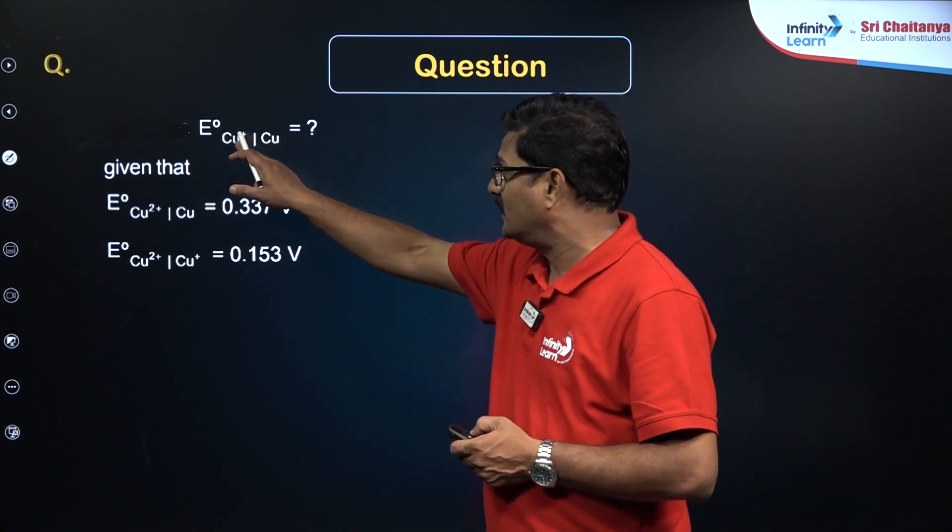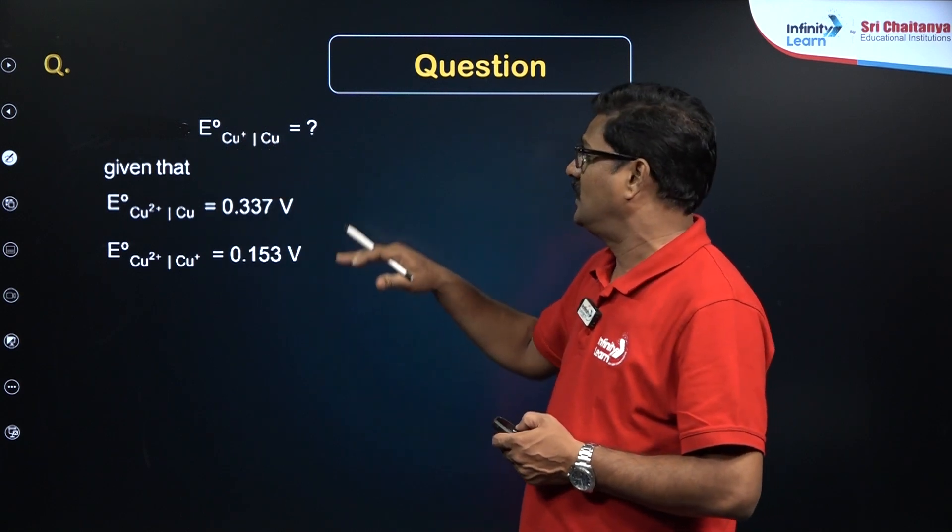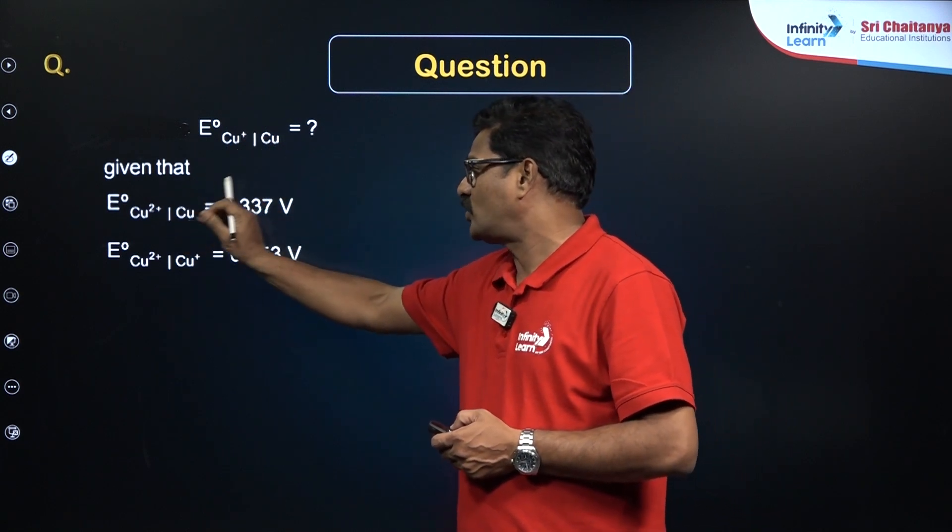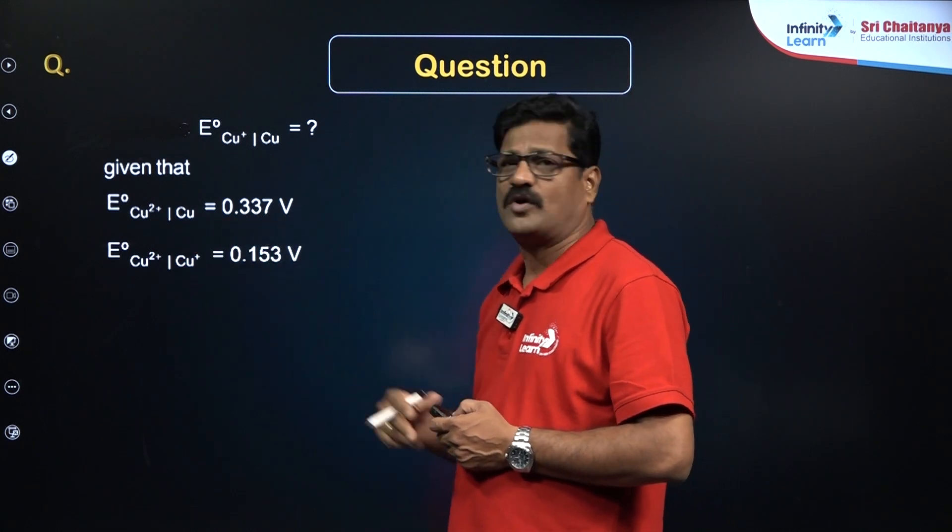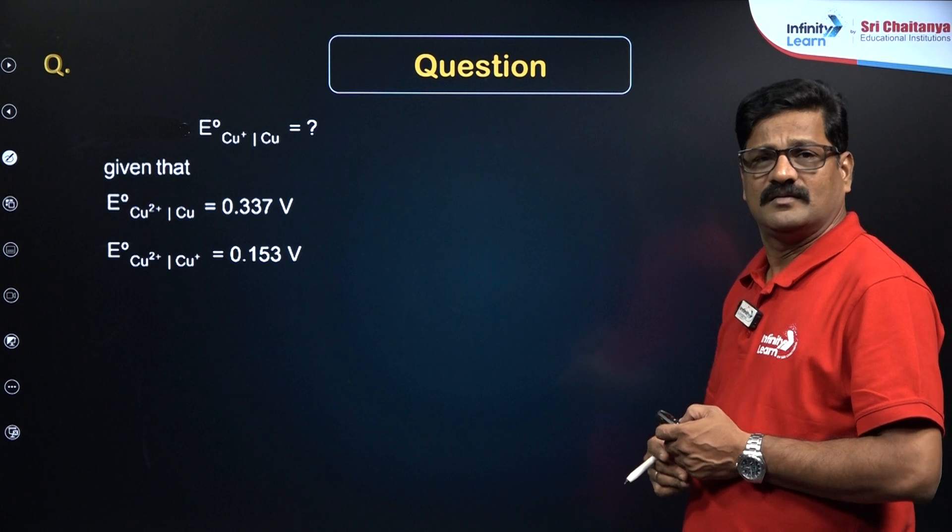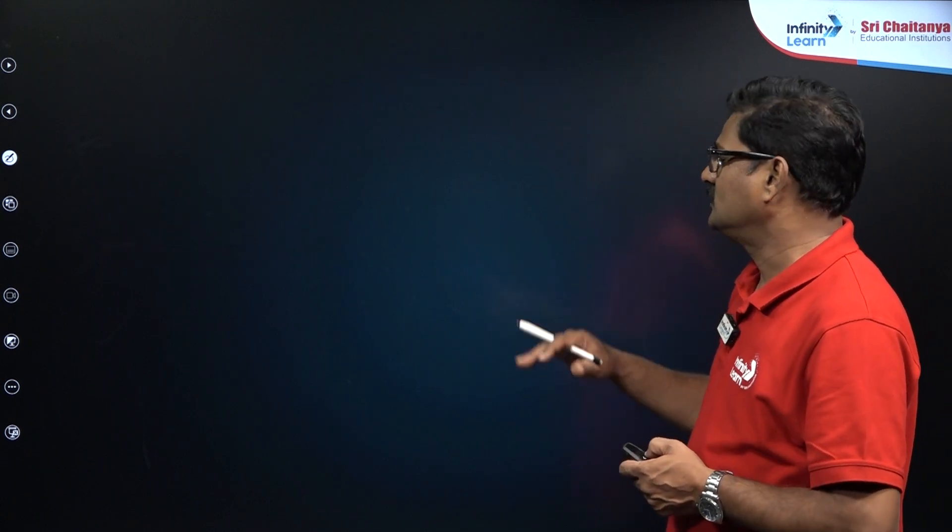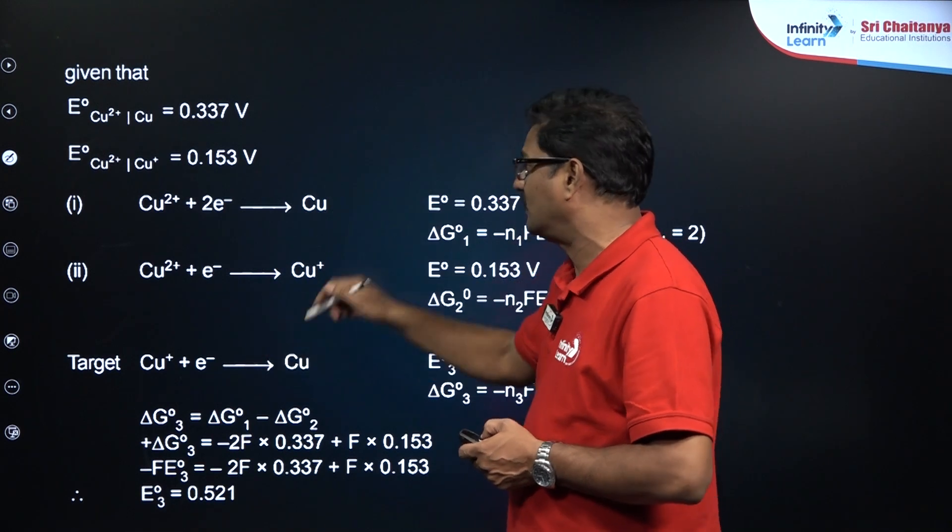You are asked to calculate electrode potential of Cu+ to Cu, and given that Cu2+ to Cu is 0.337 volts and Cu2+ to Cu+ is given as 0.153 volts. How to solve this question? This is given and you are asked to calculate this is the target.